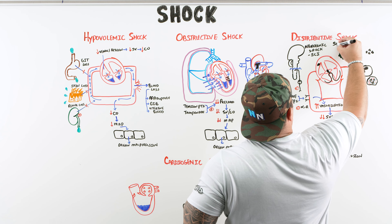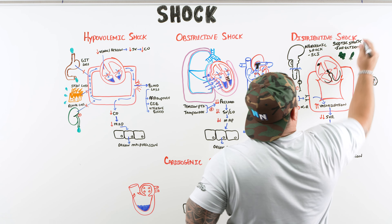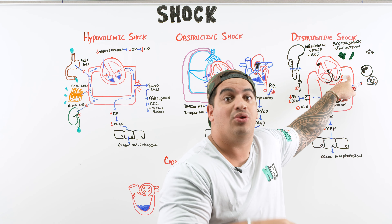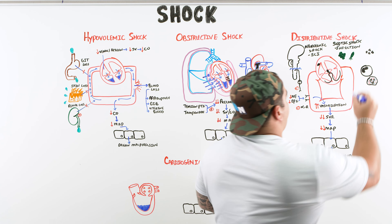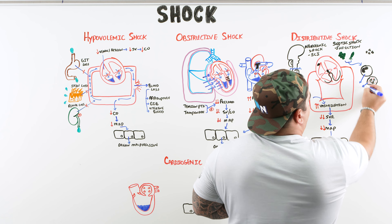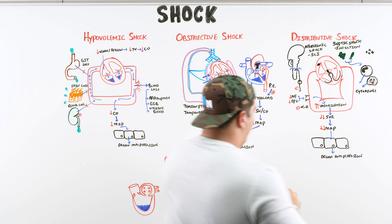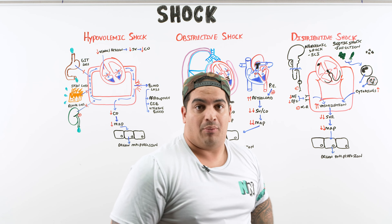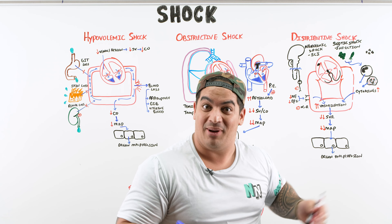The most common type of distributive shock is septic shock, caused by a serious infection. Bacteria reach the bloodstream (bacteremia), and when this leads to hypotension and systemic effects, it becomes septic shock. The bacteria activate immune cells, which release cytokines — interleukins, tumor necrosis factors — that cause intense vasodilation and the downstream cascade. The vessels also become leaky, so fluid extravasates, adding a hypovolemic component.